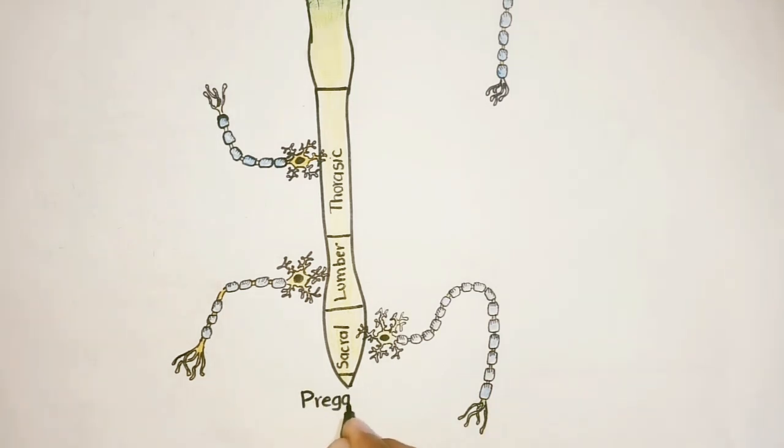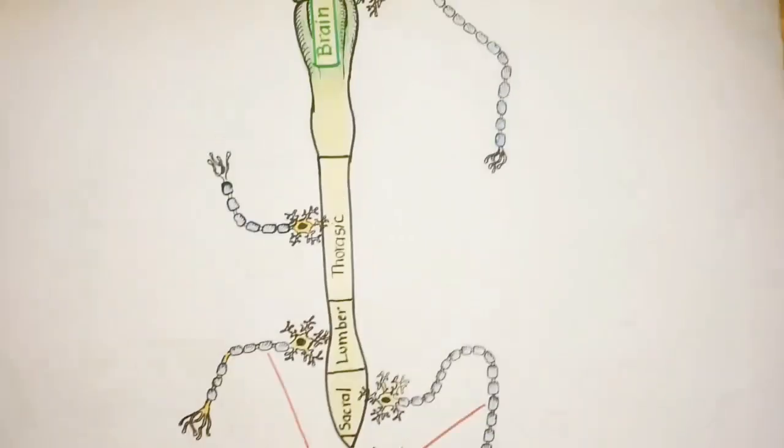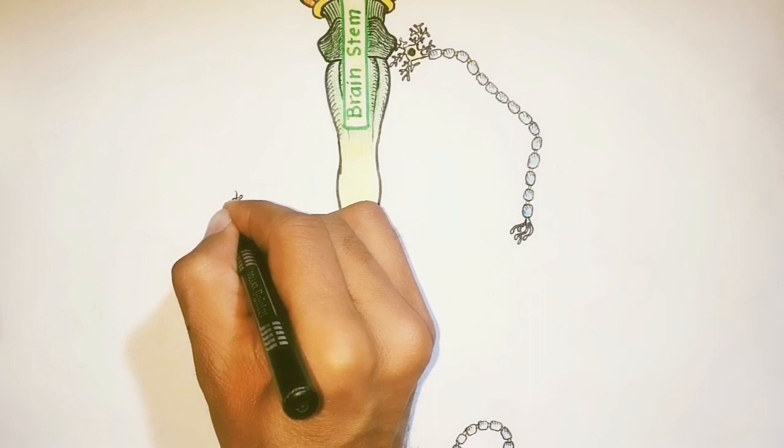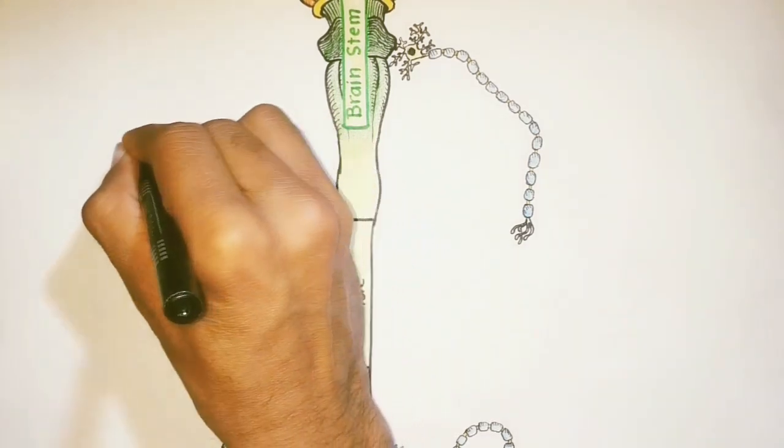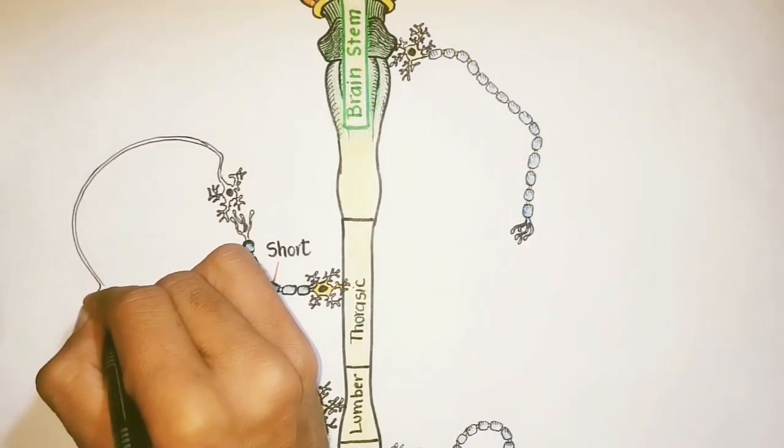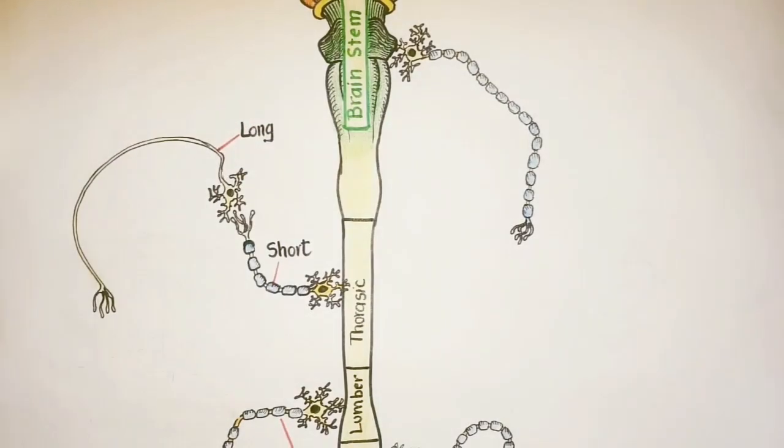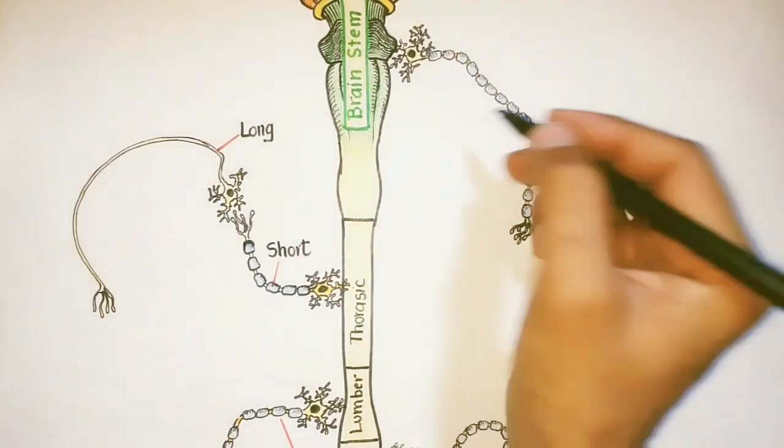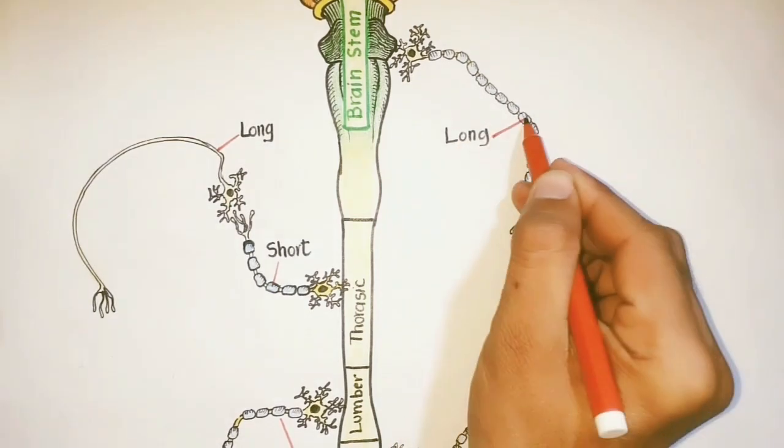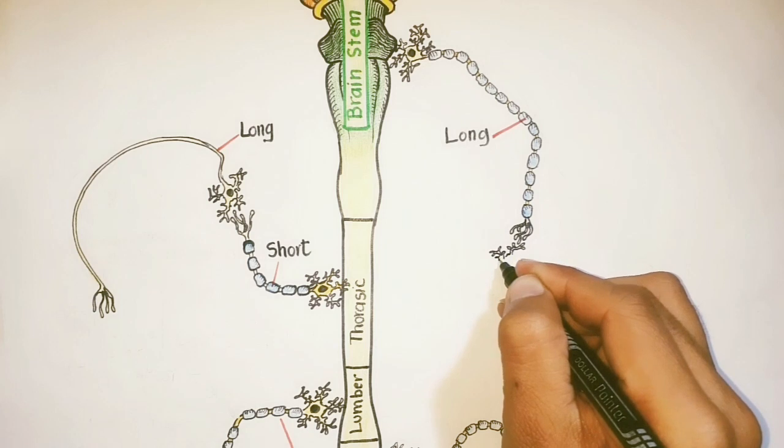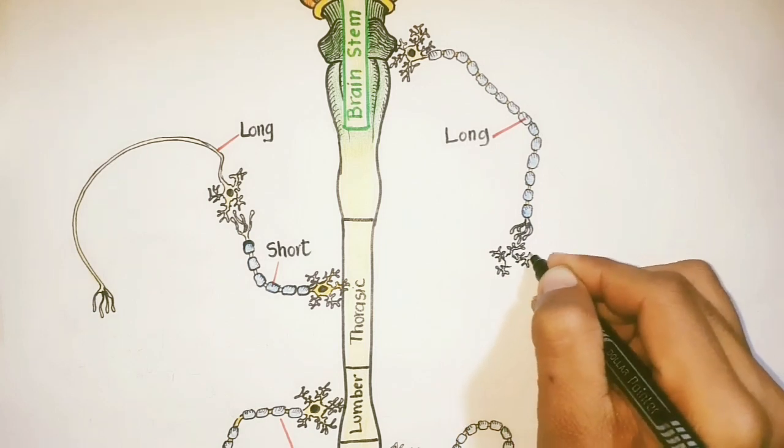Moreover, the preganglionic fibers of the sympathetic division are short, and the postganglionic fibers are long. While in case of parasympathetic division, the preganglionic fibers are long and the postganglionic fibers are short.